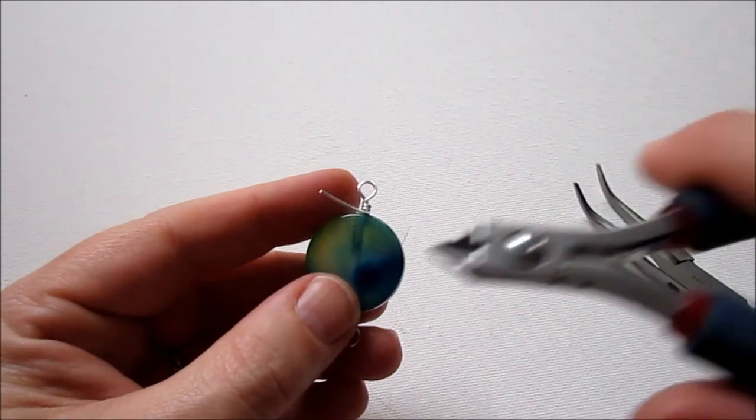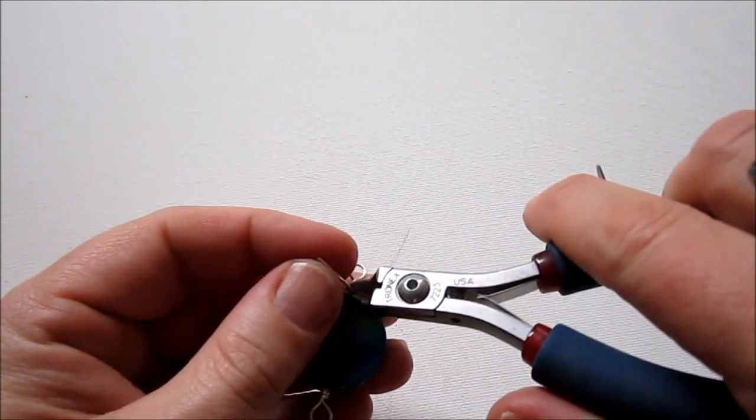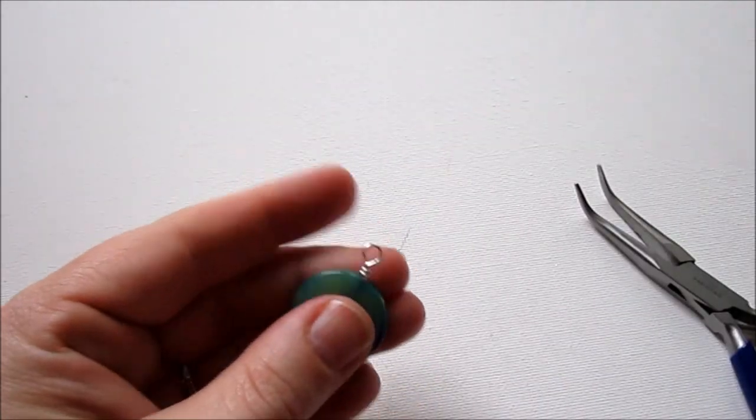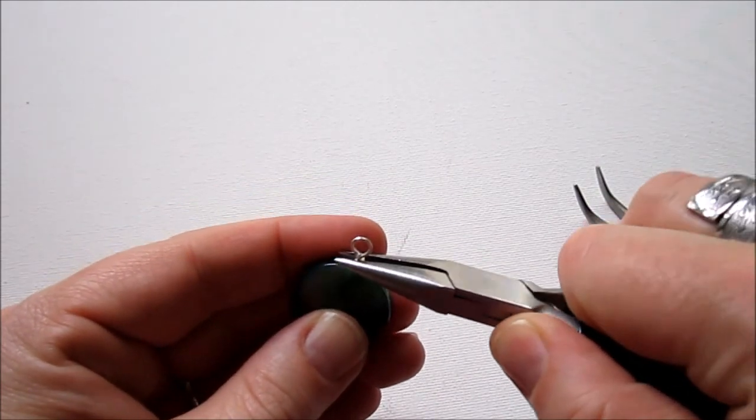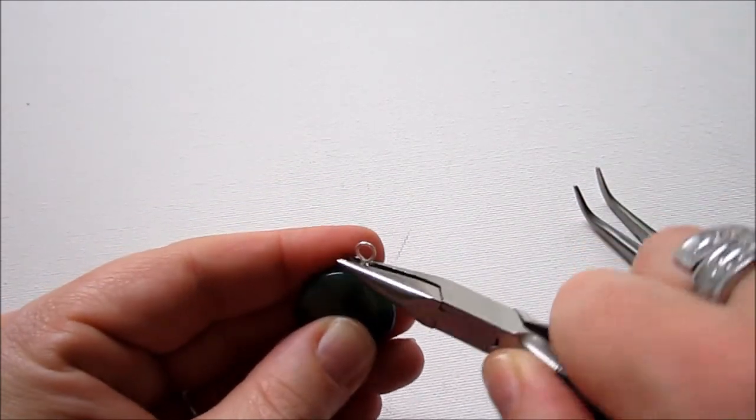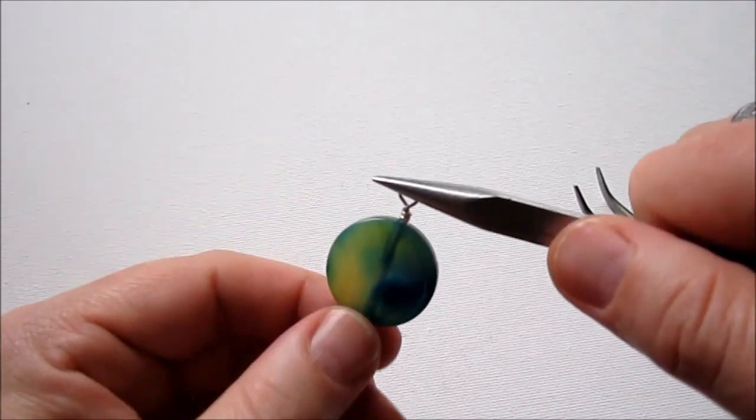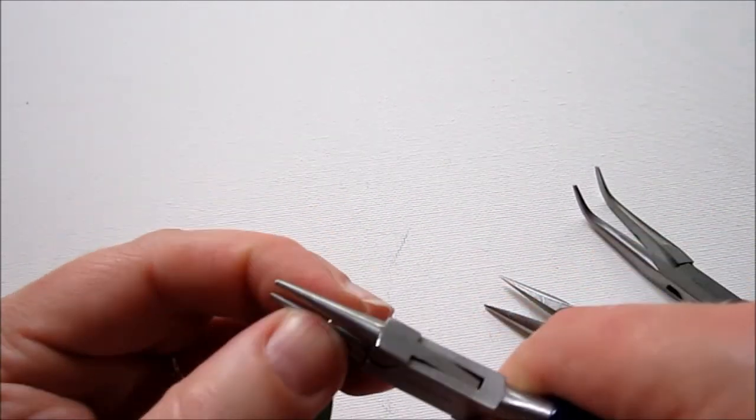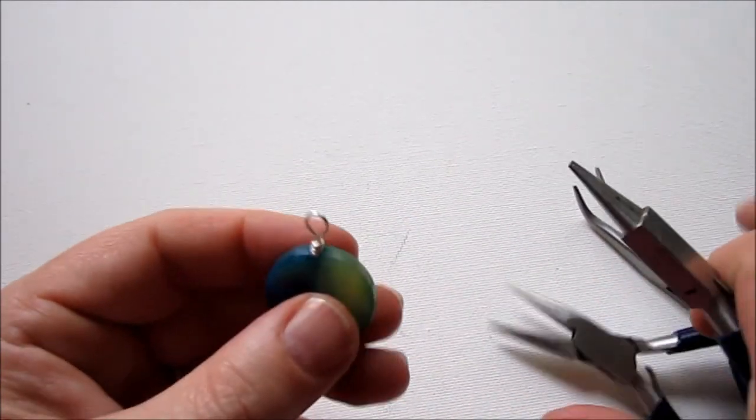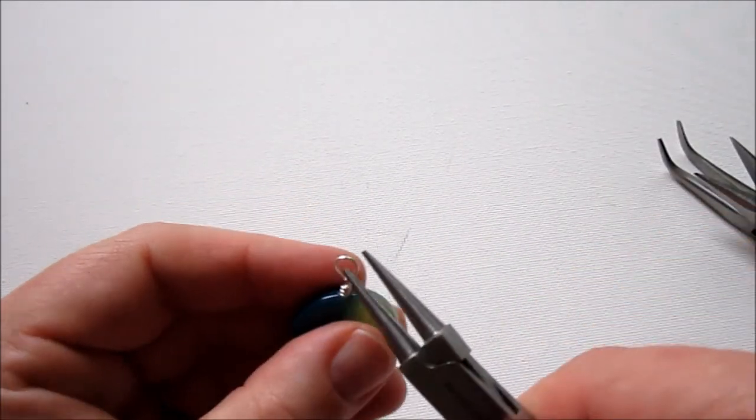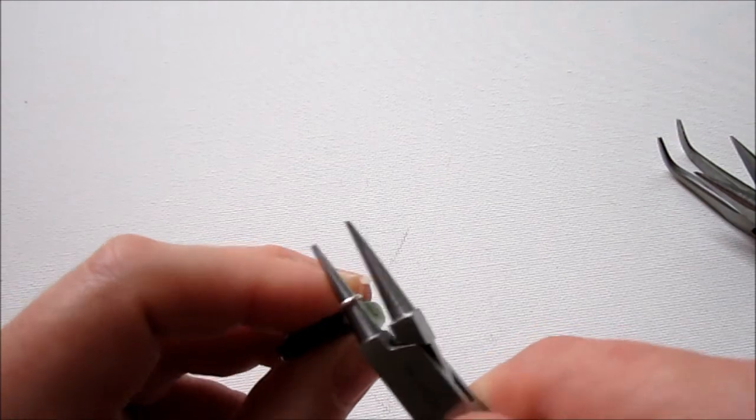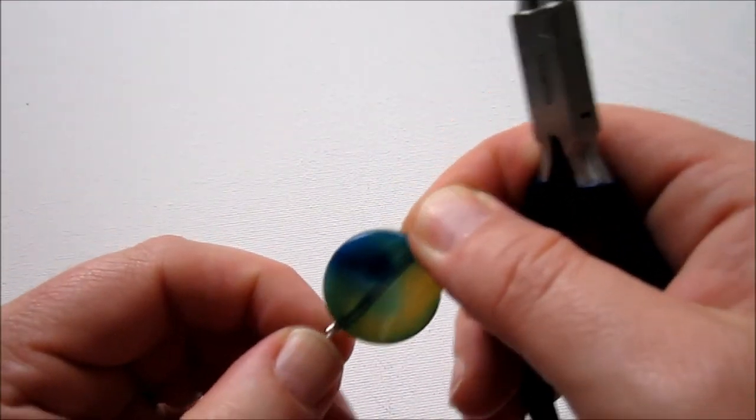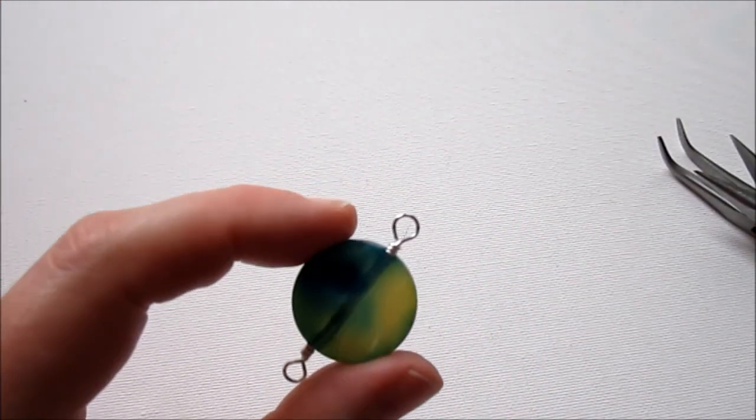So, again, we'll trim off the excess wire, making a flush cut. And then, use our chain nose pliers to make sure that end is not poking out and kind of make sure everything is straight. If your loops ever don't quite look like a circle when you're done with them, you can just insert your round nose pliers as far as they'll go, and it will make a circle again. I'm going to put this aside for a second.